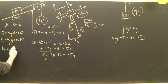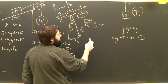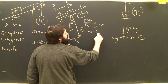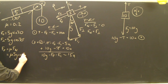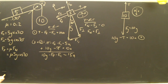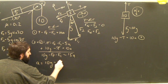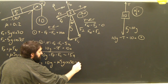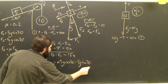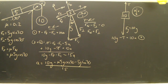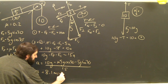FF equals mu times FN. From the Y direction of our first free body diagram, FN equals F_perpendicular, which is 5G cos 30. So FF equals mu times 5G cos 30. F_parallel is the sine of 30 times FG, so it's 5G sin 30. Dumping all these into the equation for A: A equals (10G minus mu times 5G cos 30 minus 5G sin 30) all divided by 15, which gives an answer of A = 8.1 meters per second squared.